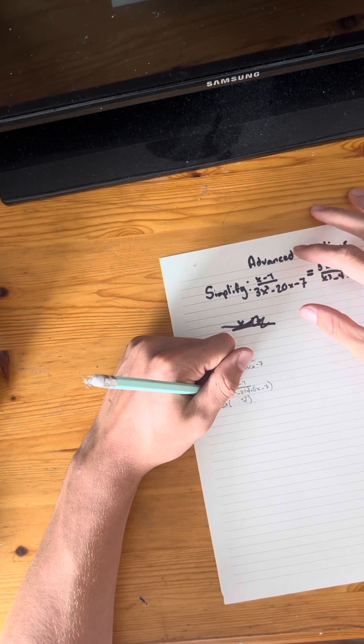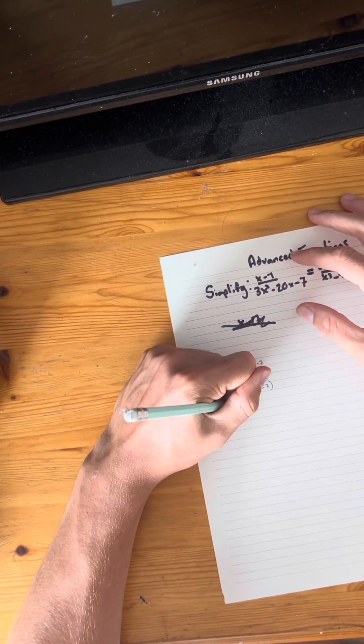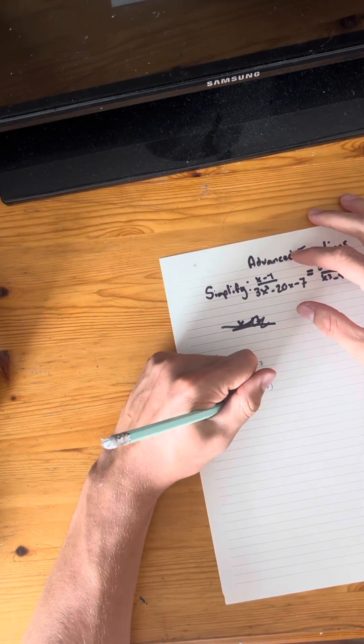Now over here, 3x squared, since we already got rid of it, it would just be x. So x take away 7 is your first bracket.